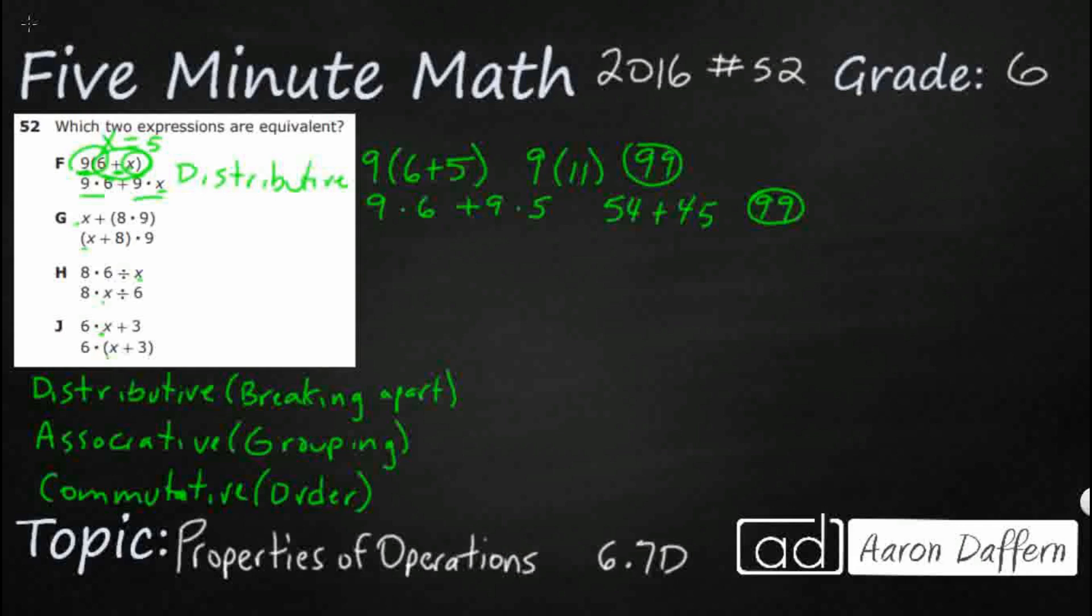Let's just double check to make sure the other ones don't work. So we've got this G right here. So we've got 5 plus, and then I've got 8 times 9. So that's 5 plus 72. So that makes 77. Now we put, so they tried to use the grouping, the associative property.